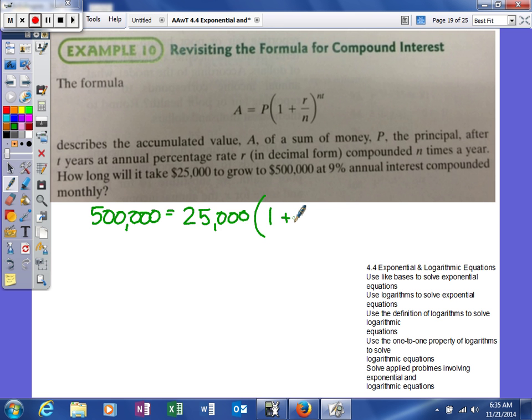1 plus, we know our interest rate, but of course, just like before, it has to be written as a decimal. Since it's compounded monthly, we're going to use 12 for N. So the only variable we don't know in this problem is T, so we need to solve for T.